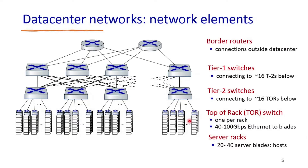Then we have the border router. Each border router is connected with each of the Tier 1 switches, and the border router serves as the external link — the gateway that connects the whole data center to the external internet.